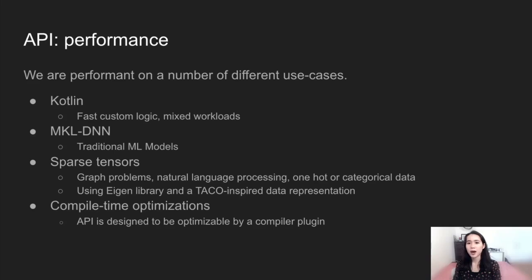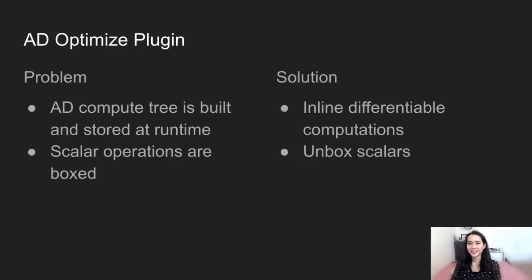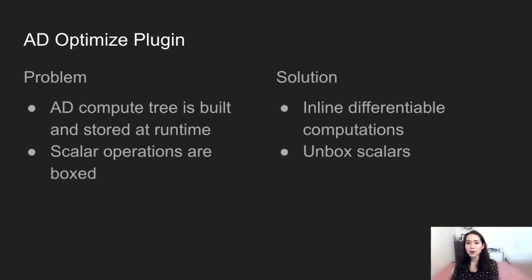We are also developing a couple of compile-time optimizations that work with our library. Our AD implementation produces a compute tree for evaluating the derivative, which is built at runtime with a node created for each operation. This approach comes at the cost of extra allocations and function calls — a common problem in automatic differentiation frameworks. Our ADOptimize plugin addresses this cost by inlining differentiable computations and unboxing scalars.